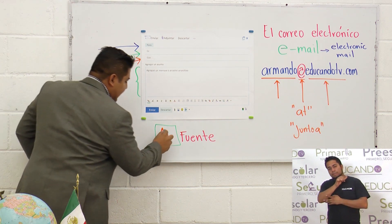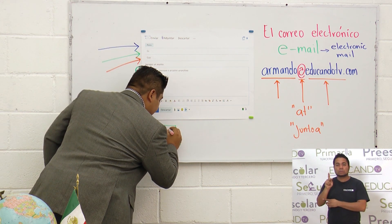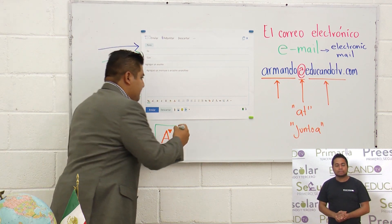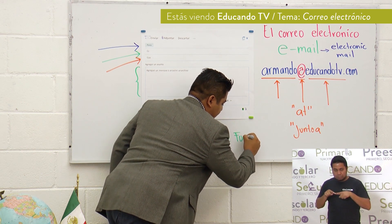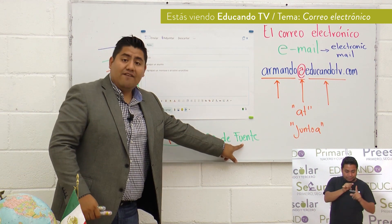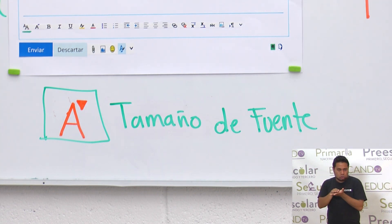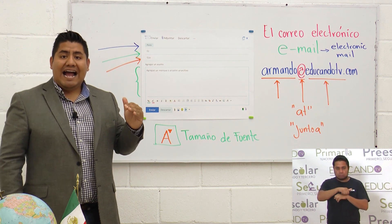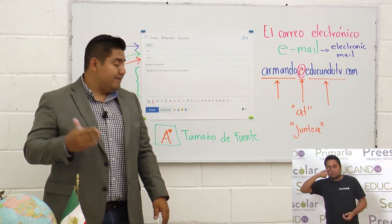El siguiente ícono es la misma letra A pero con un triángulo hacia abajo, y significa 'tamaño de fuente'. Si ya reconocimos que el ícono anterior era la fuente, ahora agregamos el tamaño. Si necesitamos el título más grande o una letra más pequeña, al oprimir este ícono aparecerán opciones desde el número 8 hasta el 126, que son los diferentes tamaños de fuente disponibles para escribir tu texto.